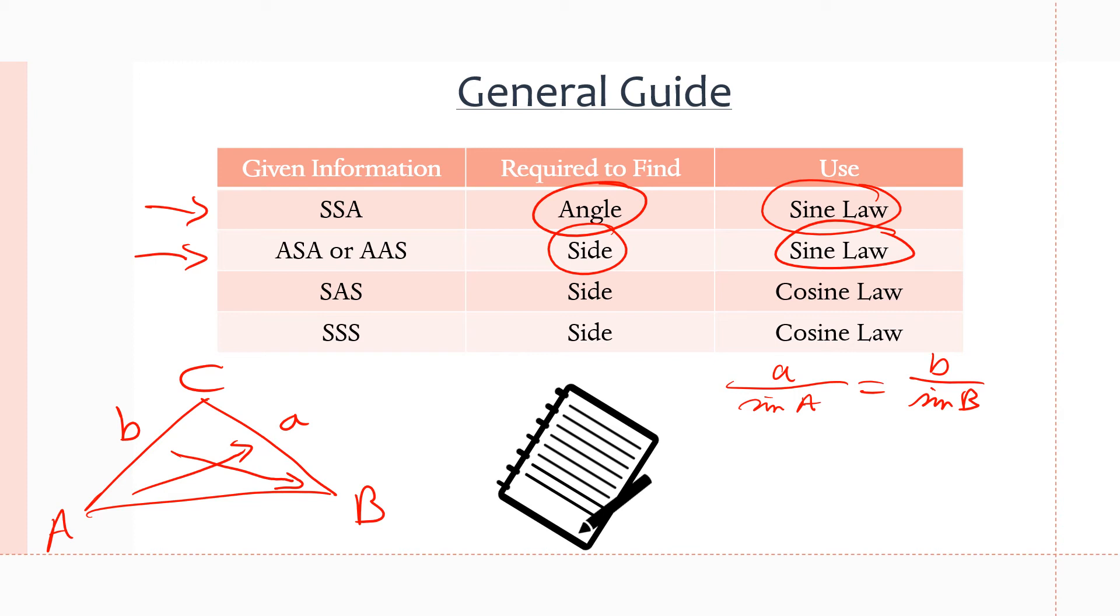At this point, we know B, we know lowercase b, we know angle A. All we need is lowercase a, so if we multiply sine A by each side, we isolate for A, and we get B sine A over sine B equals A, and we can find our last side. Okay, so that is our second scenario.